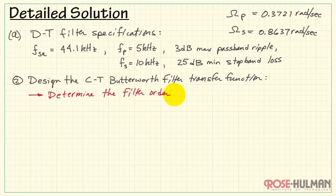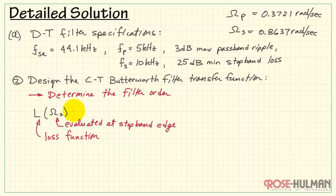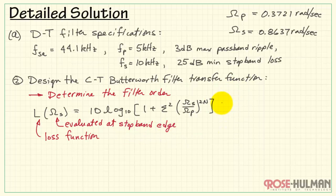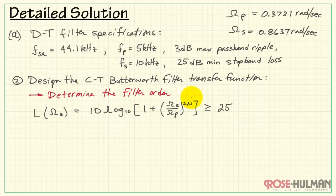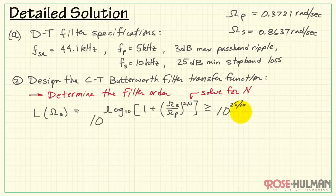In step 2, we design the continuous-time Butterworth filter transfer function. First, we determine the filter order. The loss function for the Butterworth filter evaluated at the stopband edge gives us an expression where the loss needs to be at least 25 dB, so we write this as greater than or equal to 25. The parameter epsilon is 1 for a 3 dB ripple. Next, we isolate capital N, the filter order: divide both sides by 10, then use that as an exponent to base 10 to undo the log on the left side.